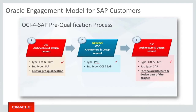Therefore, Oracle goes a different way than our competitors. Our SAP-specific engagement model relies on three pillars. First pillar: every customer has to go through a pre-qualification process to identify if the existing SAP environment is ready for an OCI lift-and-shift, or if an upgrade needs to take place first. Second pillar: we offer each customer a cost-free POC phase within our Oracle Solution Center cloud environment, with full hands-on support including workshops for all OCI-related activities.